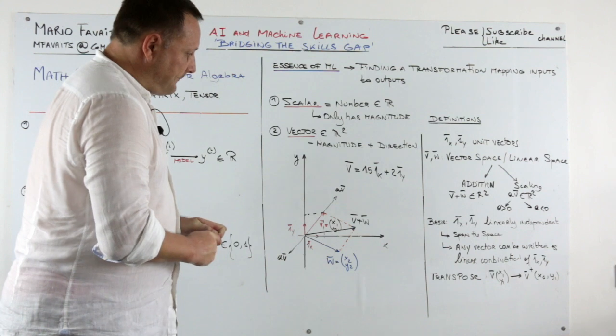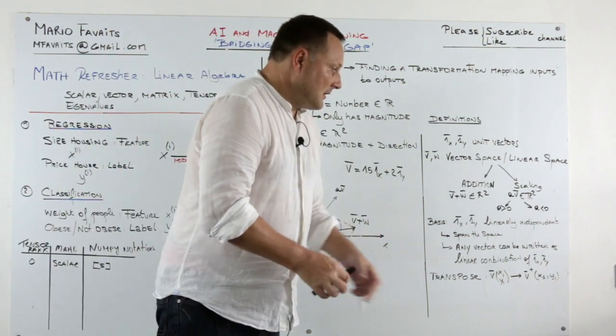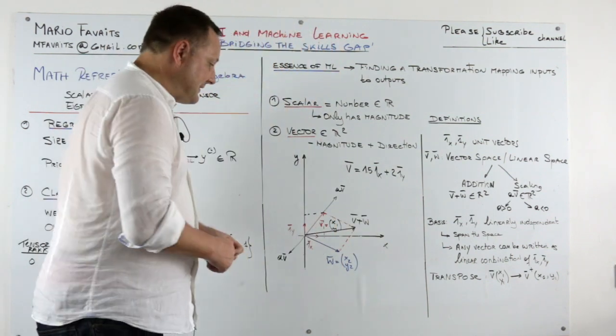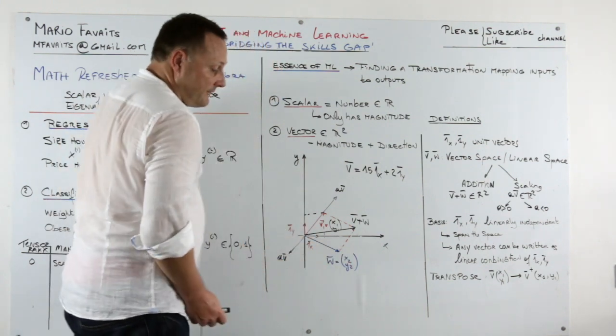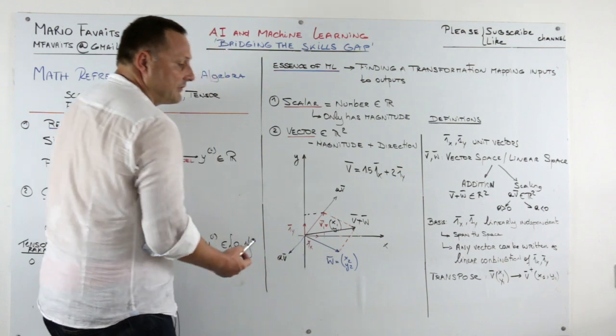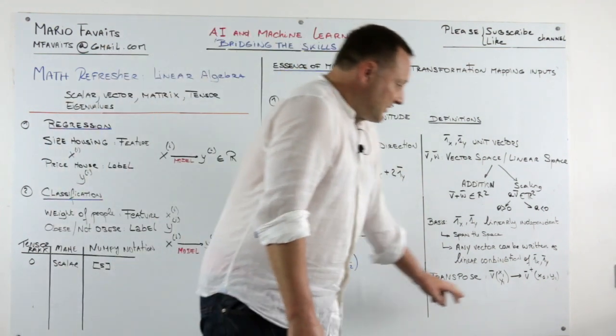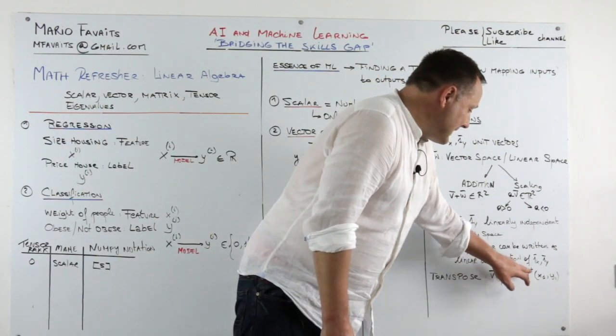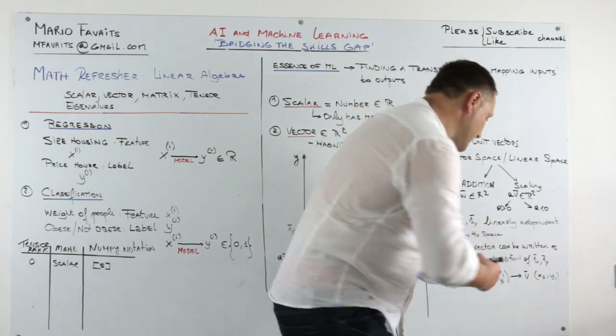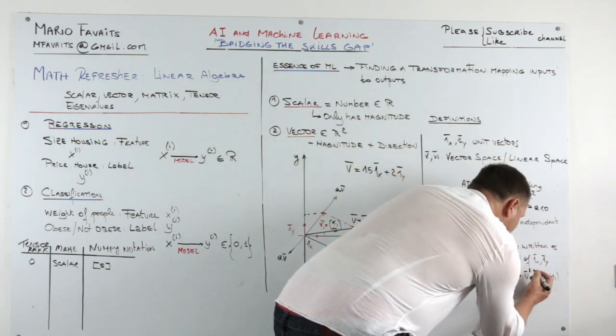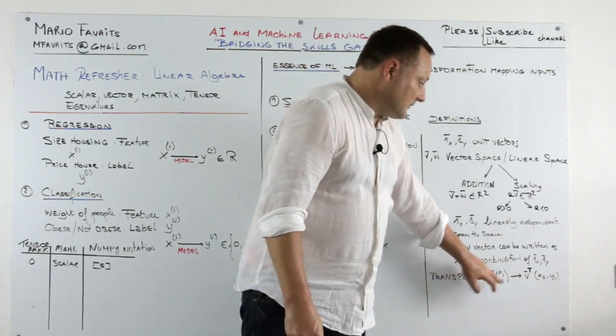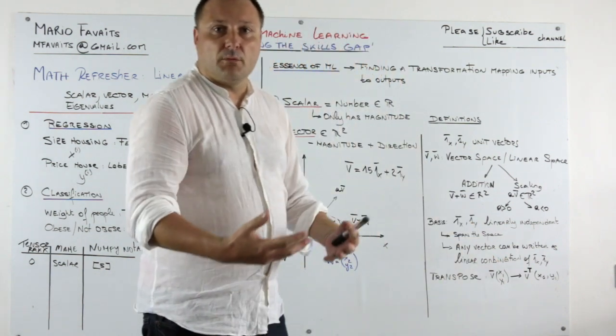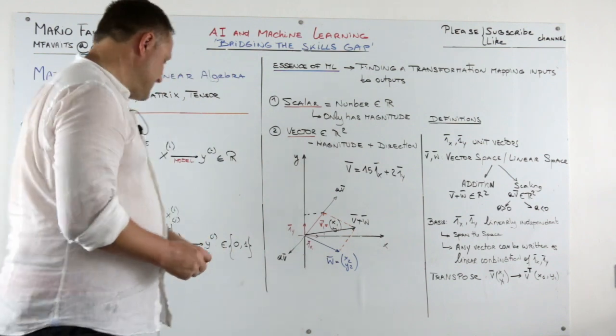Okay. Transpose of a vector. Transpose is relatively easy. Usually we write vectors as a column vector with their x and y component. But sometimes we write them as a row vector. And so v transpose just changes the column vector to a row vector. Columns become rows. As simple as that.